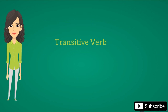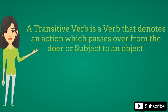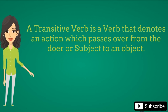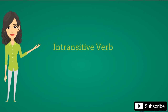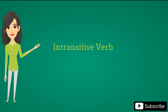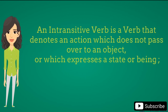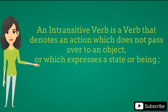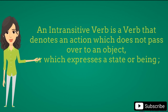Transitive verb: A transitive verb is a verb that denotes an action which passes over from the doer or subject to an object. Intransitive verb: An intransitive verb is a verb that denotes an action which does not pass over to an object, or which expresses a state or being.